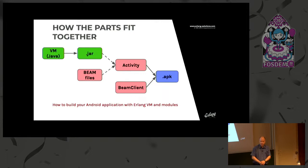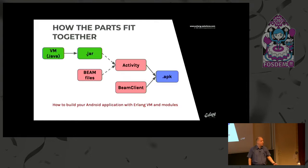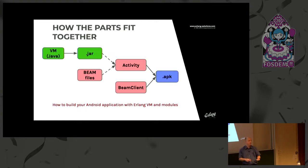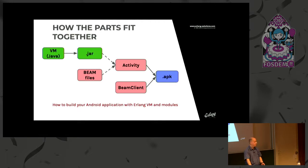How do these parts fit together? Basically, you have the VM written in Java, compiled into a JAR library that you can use. The green boxes are what you get for free. You need to add your own custom Beam files that you pre-compiled, and insert the whole thing into an Android activity. And also, you have to have a Beam client — or a customized Beam client — which has the purpose of managing the VM itself and handling the communication between the VM and your Android application. When everything is ready, you package it into an APK, and you have a deployable Android application using Erlang on your phone.